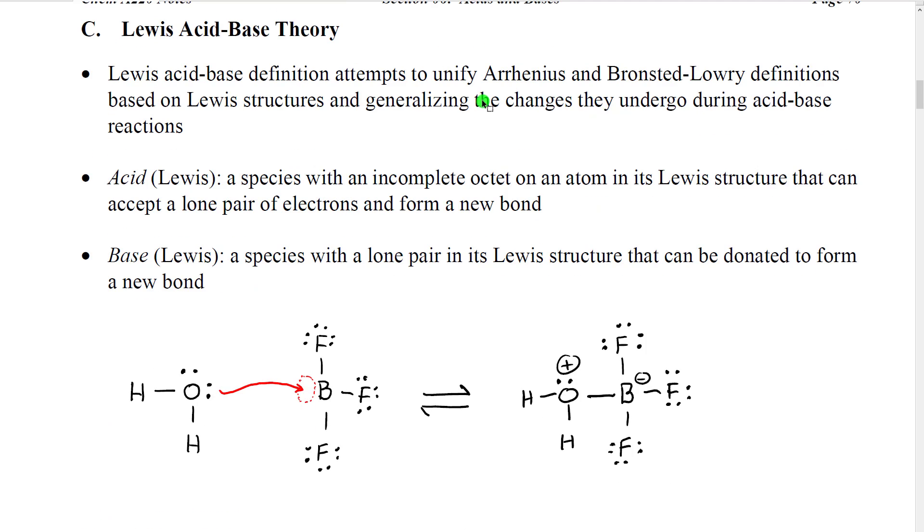The third acid base theory was actually made by Lewis and it basically represented in a sense sort of marketing for his Lewis structure theory. What he did was he looked at certain Arrhenius acids that when dissolved in water created hydrogen plus but that were not Bronsted-Lowry acids because they had no hydrogen atoms in their structure. And what he theorized was that in an acid base reaction what we actually had was a situation where a base was using a pair of electrons to make a bond into an empty space on a Lewis structure.